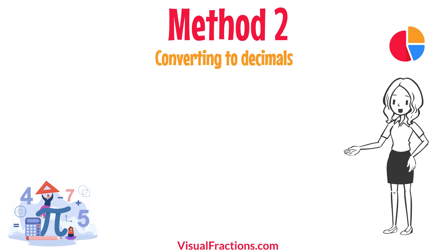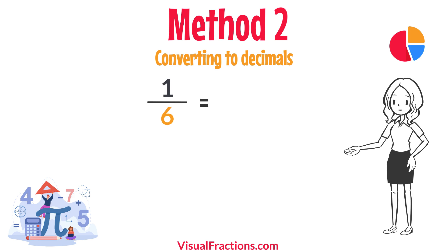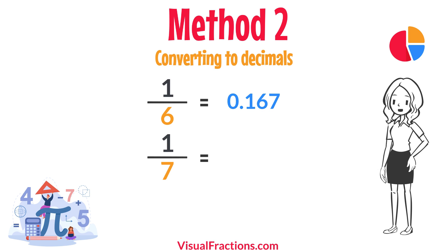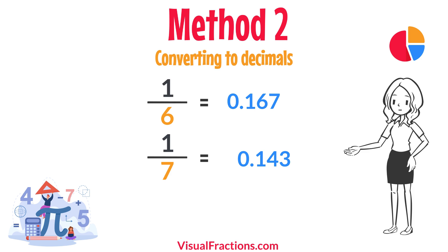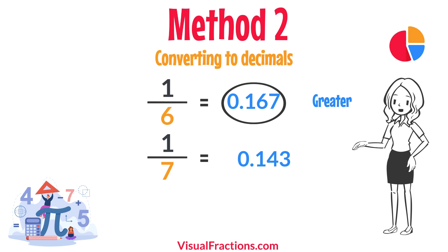For a second method, let's convert each fraction to a decimal. Using a calculator, divide 1 by 6 to get approximately 0.167, and divide 1 by 7 to get approximately 0.143. This calculation shows that 0.167 is greater than 0.143, confirming that 1/6 is indeed greater than 1/7.